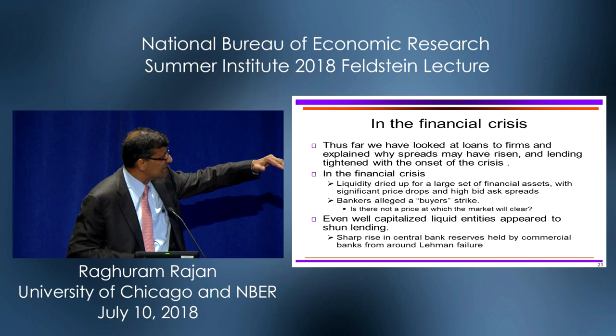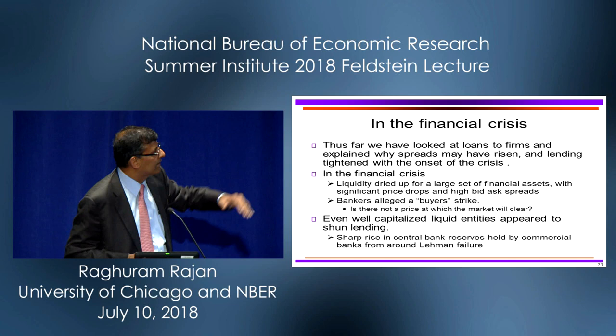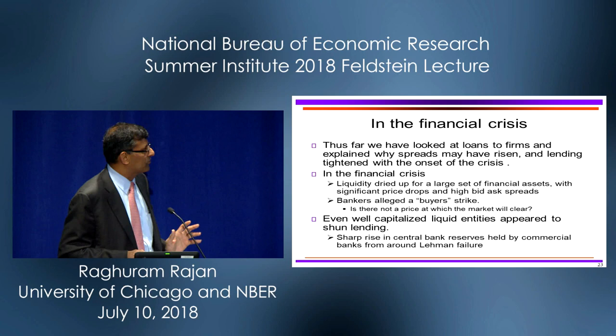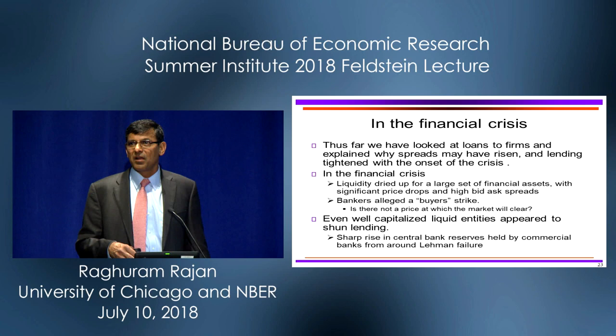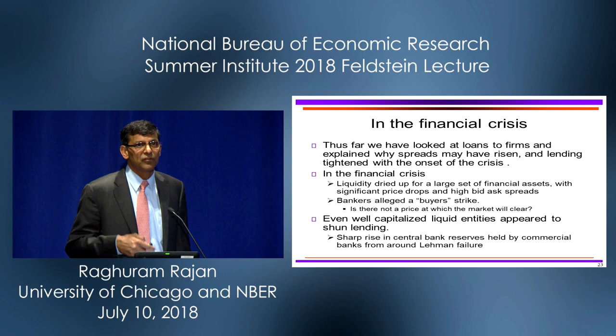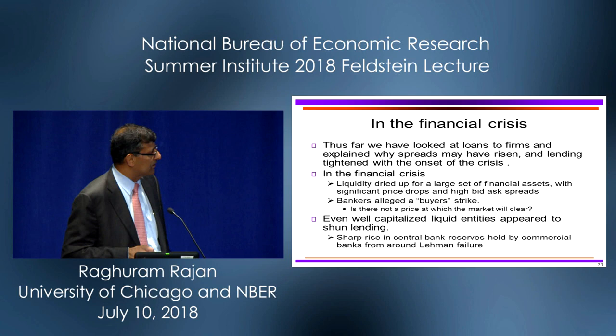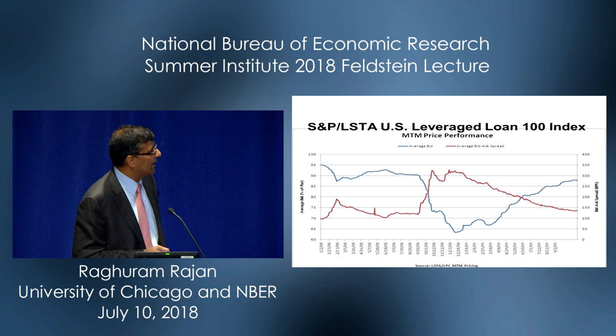In the financial crisis, what we saw was something far more dramatic. Liquidity dried up for a large set of financial assets with significant price drops, and the bid-ask spread just widened tremendously. When I talked to bankers, they said there's a buyer's strike — nobody's willing to buy, there's no price at which the market clears. And even well-capitalized entities shun lending. It wasn't that they couldn't lend — they didn't want to lend. And if you saw the reserves at the central banks, they started picking up significantly from around the Lehman failure. This is the sharp spike downwards and the recovery.